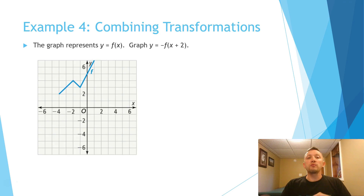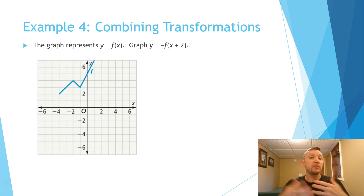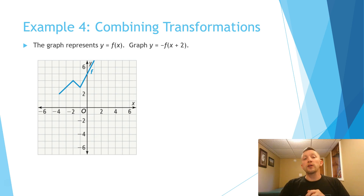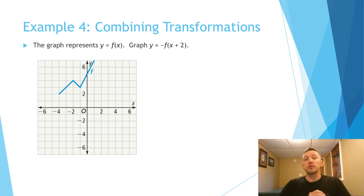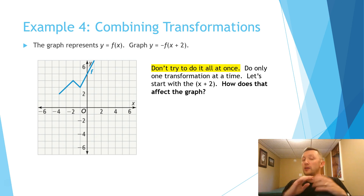Let's look at what happens when we start to combine some of these transformations. We're going to take this graph and apply two transformations. We have a negative f of our input — that's going to flip the graph over the x-axis — and then x plus 2, which means we're going to move it to the left two units. We're not going to do this all at once; we'll do one thing at a time.